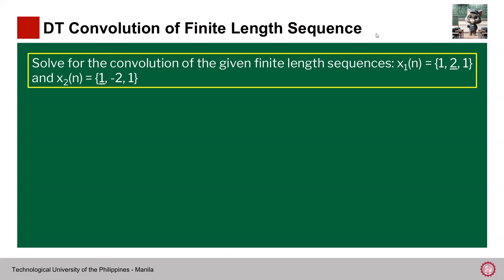Solve for the convolution of the given finite length sequences: x₁(n) equals {1, 2̲, 1} with the underline on the 2, and then x₂(n), we have {1̲, -2, 1} with the underline on the 1. The underline signifies similar to the arrow when we do in our lectures, to indicate where the index 0 is. We're going to perform discrete time convolution.